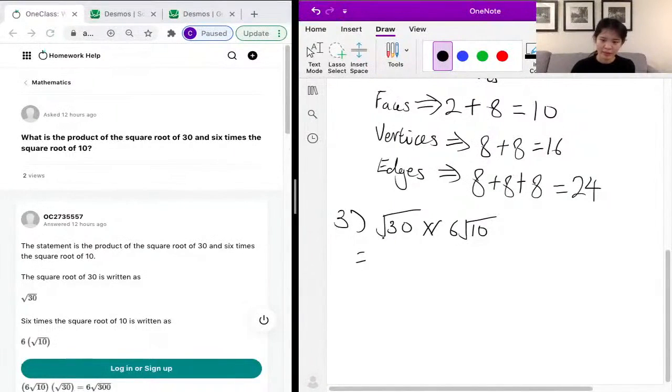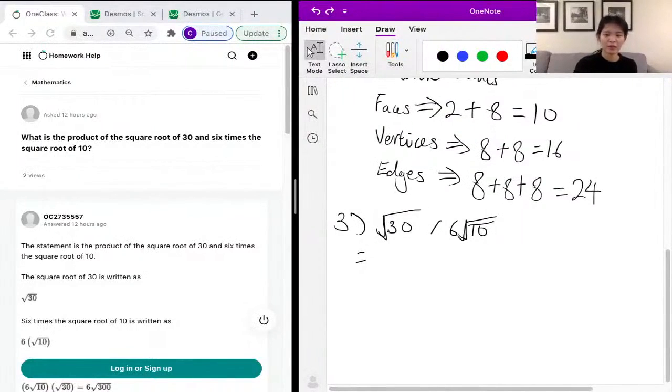We just multiply the parts in the square roots with the other parts in the square root, and we leave the 6 alone on its own because the square root of 30 is implicitly 1 times the square root of 30. So we just multiply the 1 with the 6, which is still 6, and we have 30 times 10, which is 300.